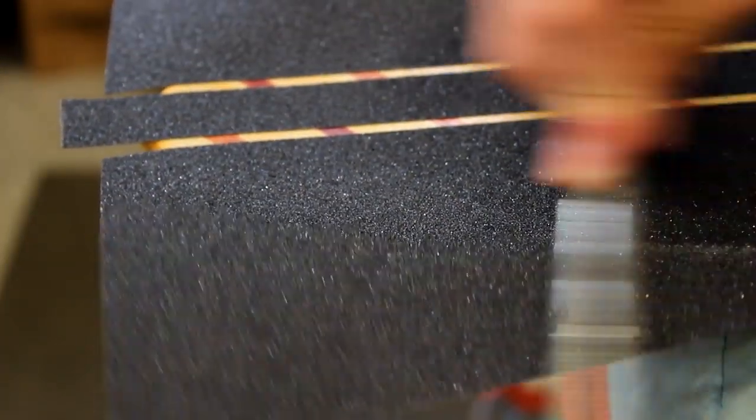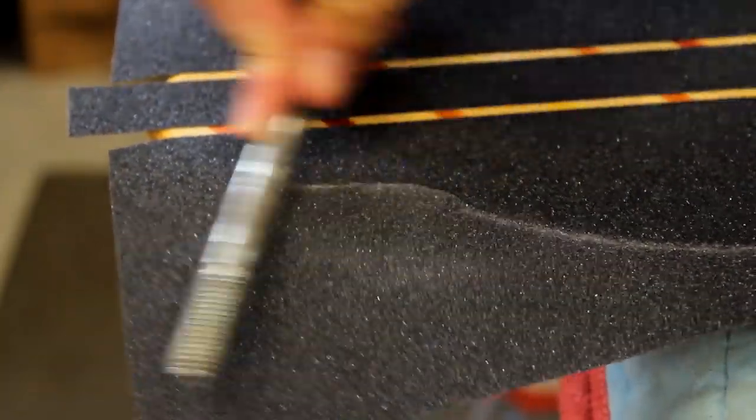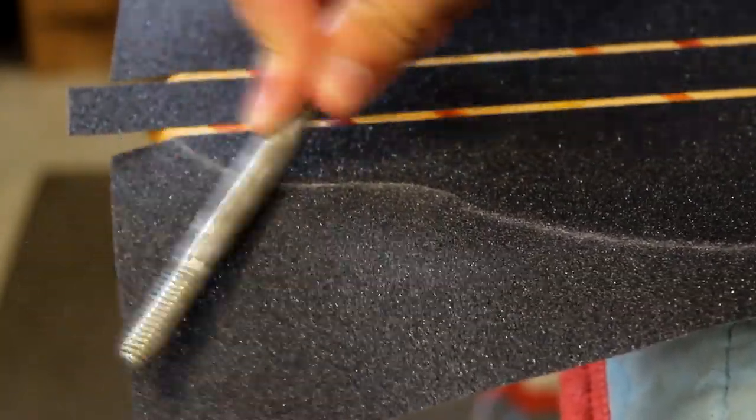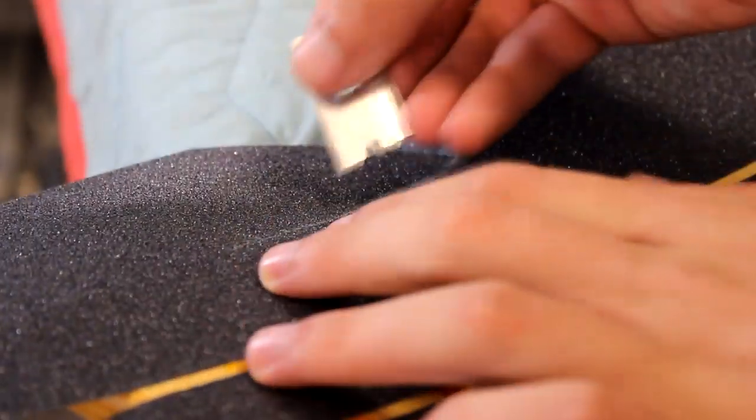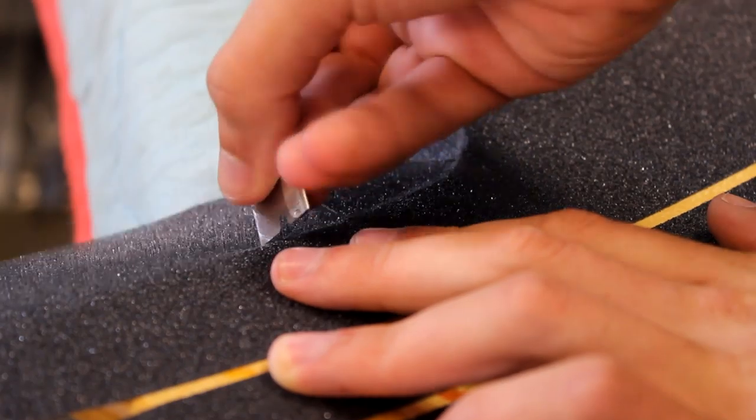Use your scrap piece of metal to rub off the grip from the grip tape around the edges of the board. This will allow for cleaner, smoother cutting. Also, don't forget to make relief cuts which allow the grip tape to flex while cutting curved areas.